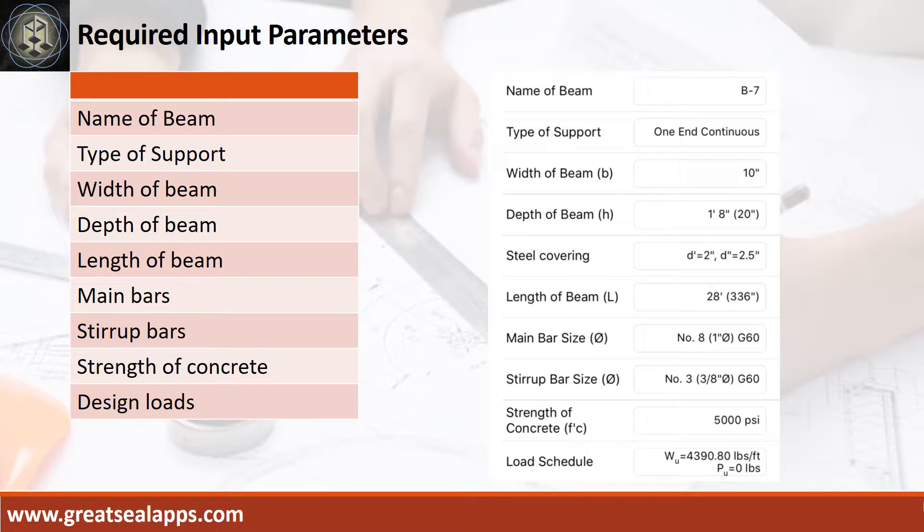Enumerate input parameters required. Name of beam, B7. Type of support, 1-end continuous. Width of beam, 10 inches. Depth of beam, 20 inches.